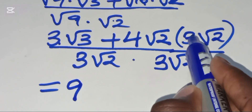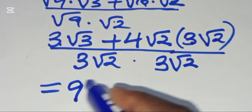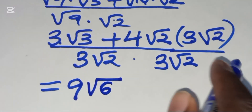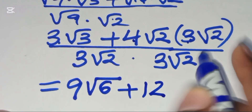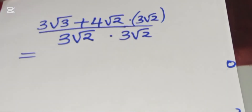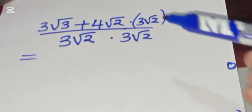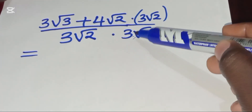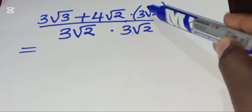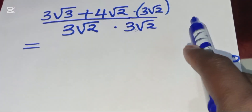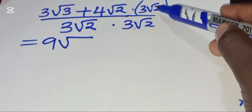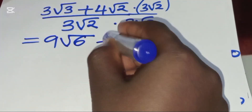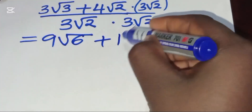Square root of 3 times square root of 2 gives square root of 6, plus 4 times 3 which is 12. So after rationalizing, the numerator becomes: 3 times 3 equals 9, square root of 3 times square root of 2 gives square root of 6, plus 4 times 3 equals 12, and square root of 2 times square root of 2 gives square root of 4, which equals 2.